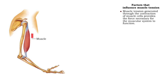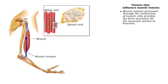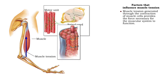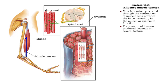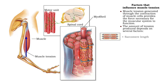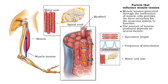Contraction of muscle cells generates muscle tension, which provides the force necessary for the muscular system to function. The amount of tension generated depends on such factors as sarcomere length, frequency of stimulation, and the size and number of motor units involved.